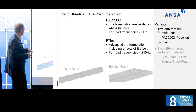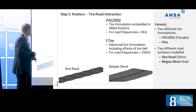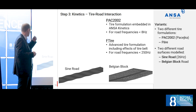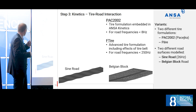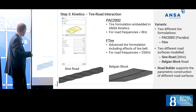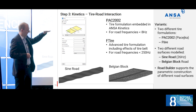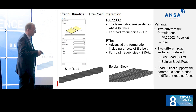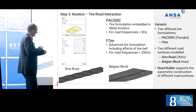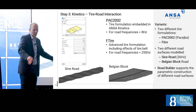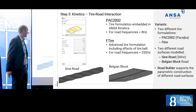For tires, we have Pacejka, F-Tyre, and multi-body options. In ANSA kinetics we used just F-Tyre for the results shown here. We have a road builder where you can define roads. I have a sine wave road designed to produce excitation at the car at 26 Hz. We can compare this sine road with the Belgian block road, which is a cobblestone road with more random-like excitation.